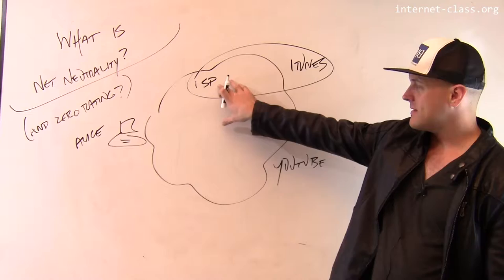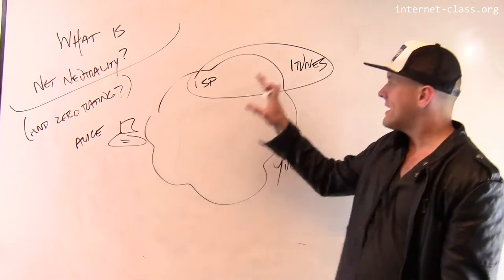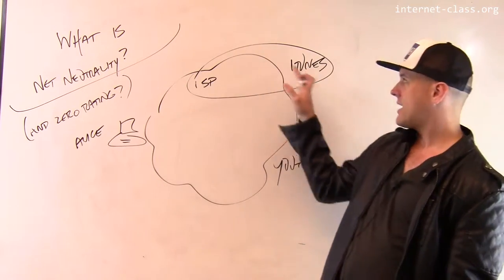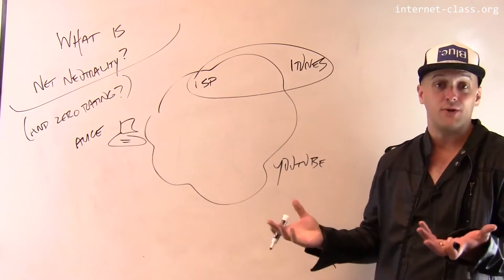And so the ISP is now saying, okay, I want iTunes to win. If Alice is making a choice based on network performance, I want to give iTunes a boost. How do I do that?